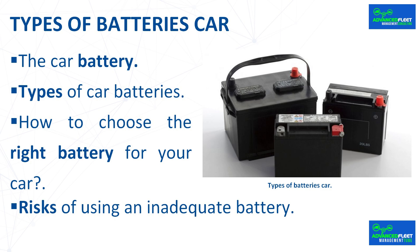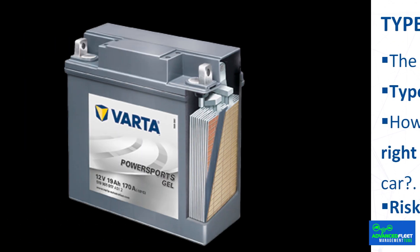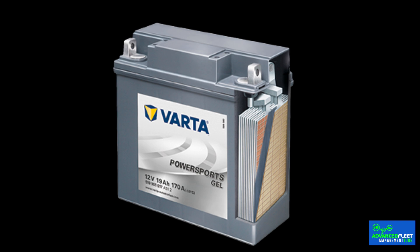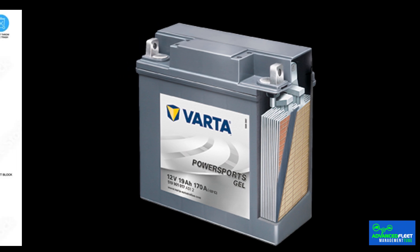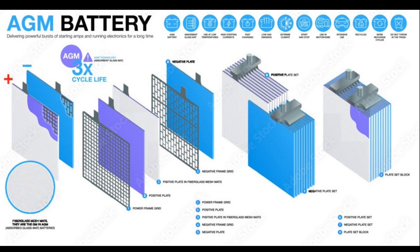VRLA batteries — gel and AGM. VRLA (valve regulated lead acid) batteries are sealed and maintenance free. They are divided into two types. One: gel batteries, which contain acid converted into gel using silica, ideal for vehicles with high electrical requirements. Two: AGM (absorbent glass mat) batteries, which use a fiberglass mesh that absorbs the acid, allowing greater efficiency and durability. They are perfect for vehicles with complex electrical systems or for use in extreme conditions.